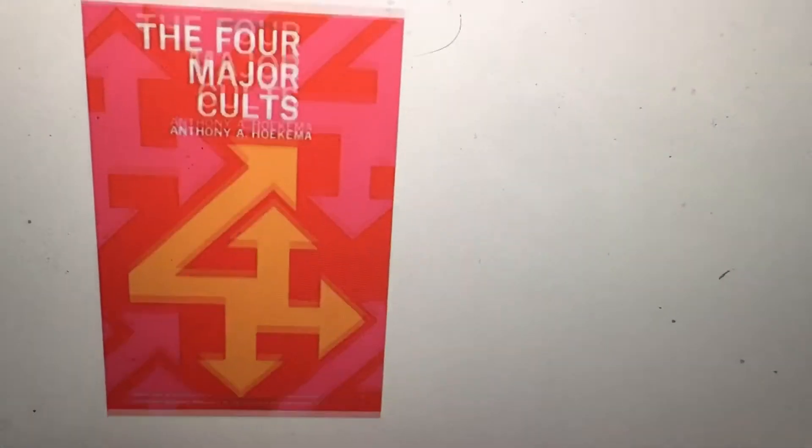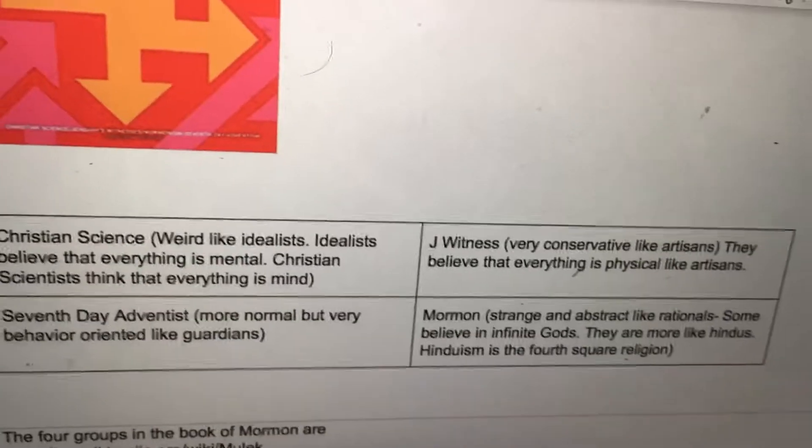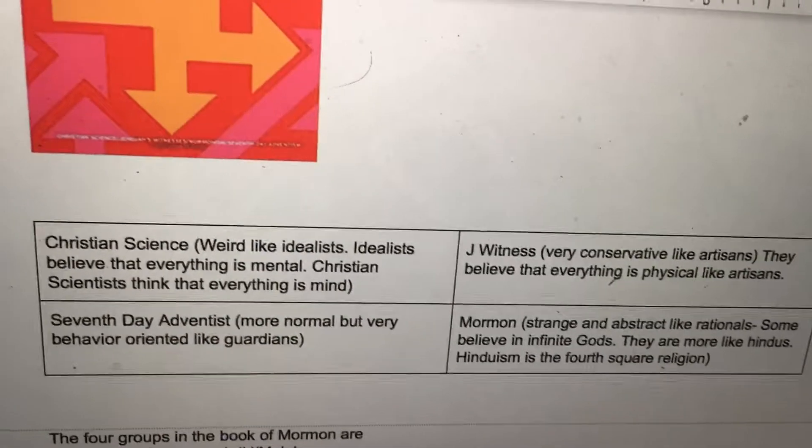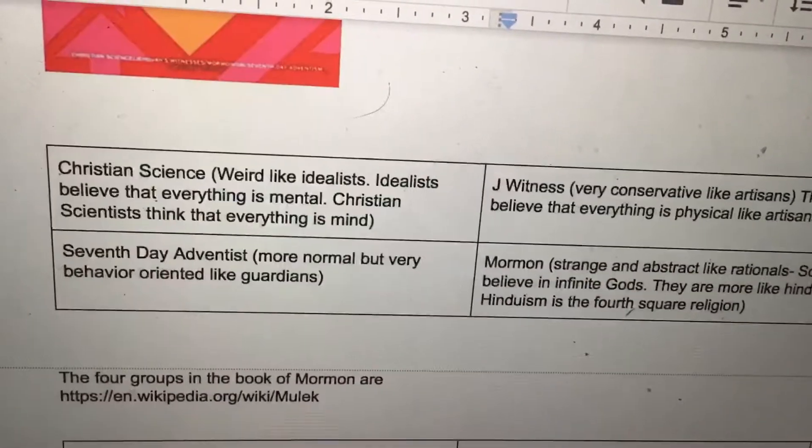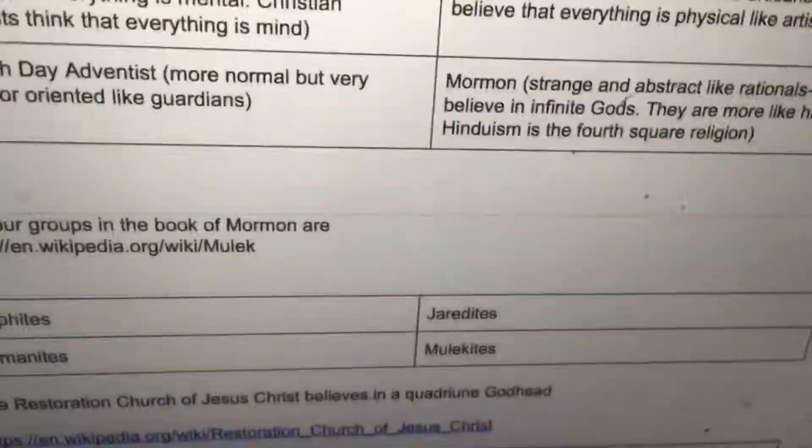The four major cults — from a book called The Four Major Cults — are: Christian Science, Seventh-day Adventists, Jehovah's Witnesses, and the Mormons.